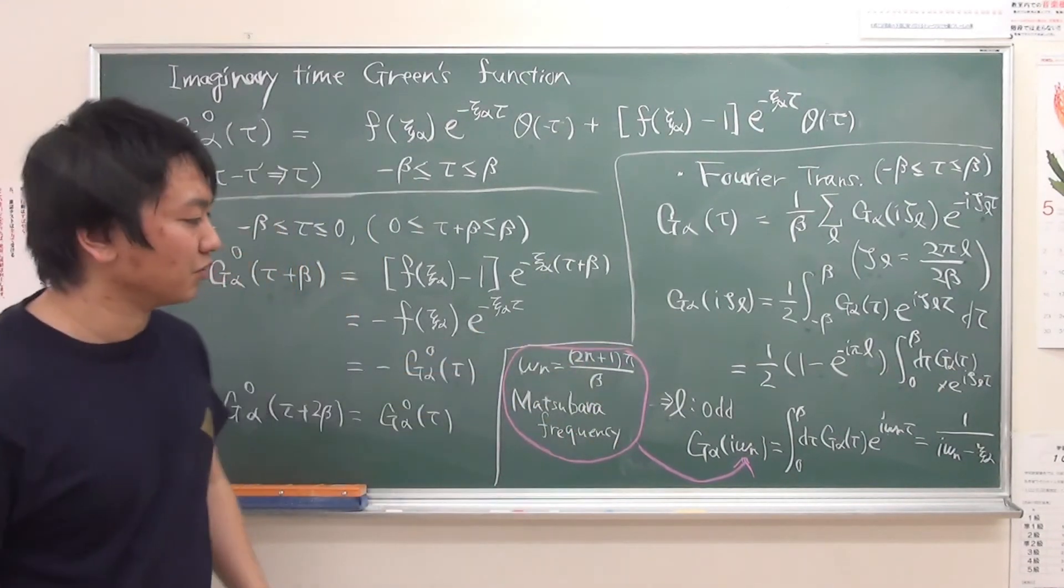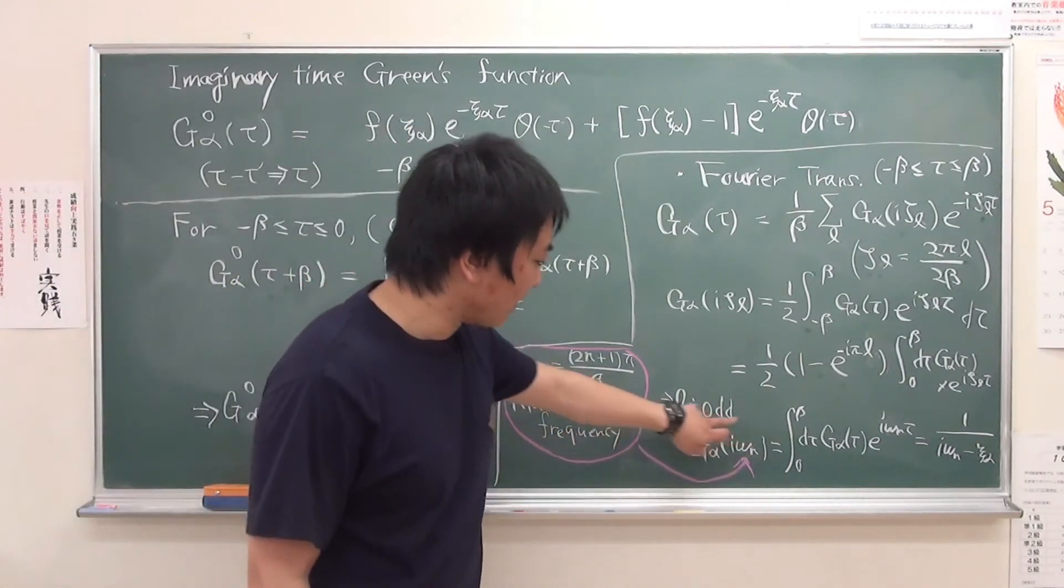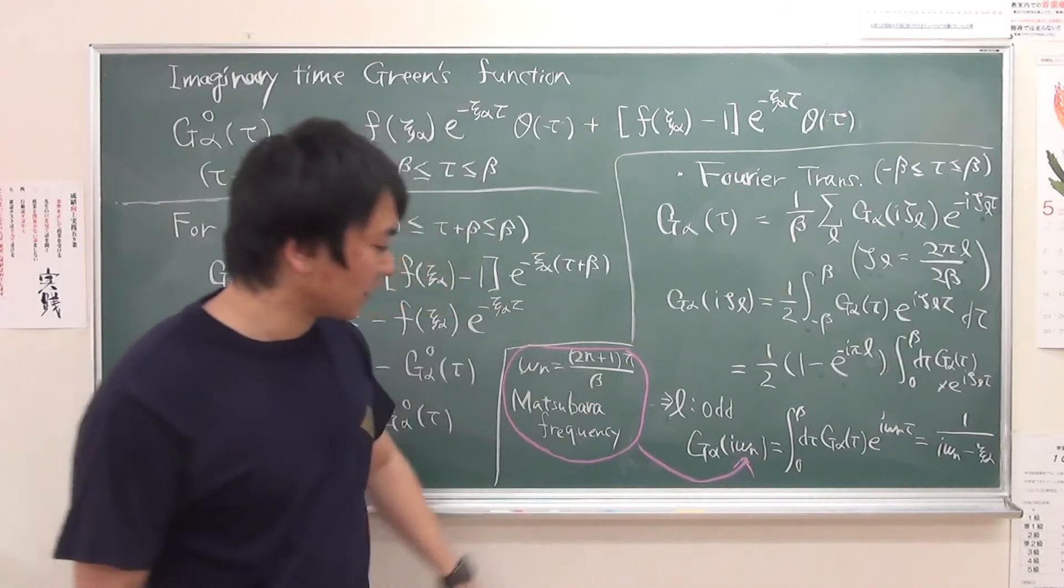Of course, we can derive boson case. So this is so-called Matsubara Green's function.